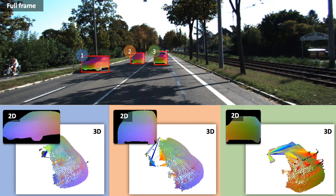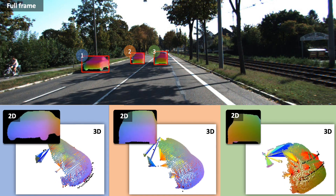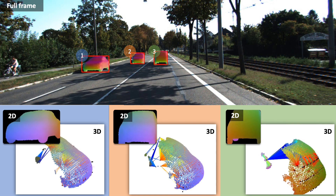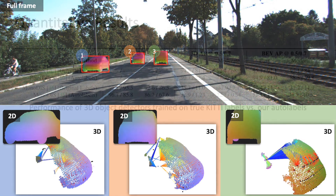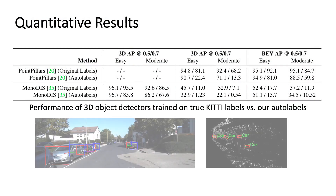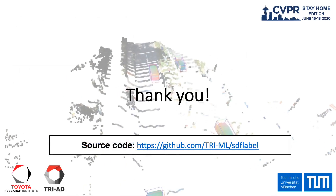Next, we show an example optimization procedure on a KITTI frame. We investigate the applicability of our auto-labels to the task of 3D object detection, and evaluate them for LIDAR and monocular-based detection. Remarkably, the detectors trained on our auto-labels alone achieve results comparable to the current state-of-the-art. Thank you for your attention.